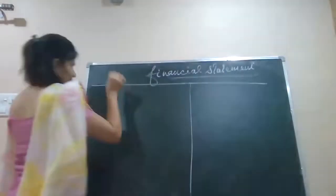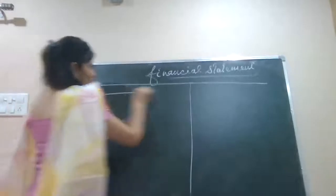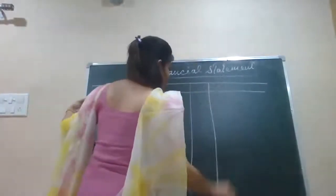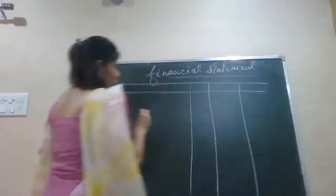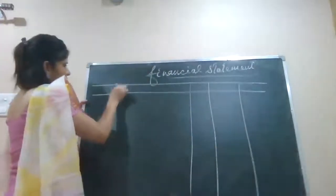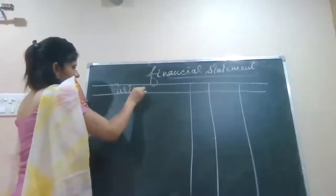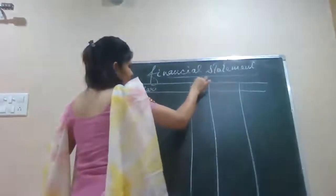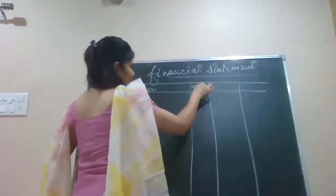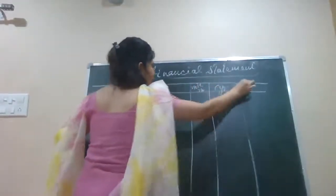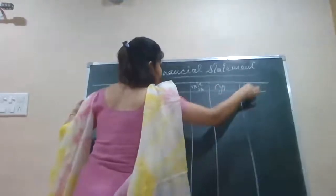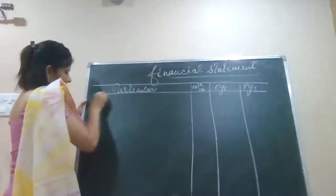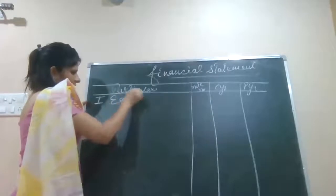In yesterday's lecture, this was for particulars — again and again I am repeating the format. So this was particulars, it was for note number, it was for current year, then it was for previous year. I told you in Roman we will be writing equity and liabilities.